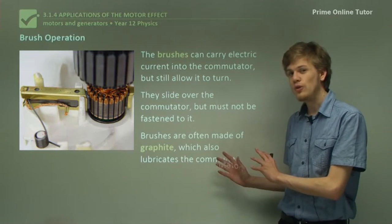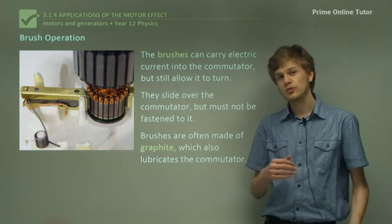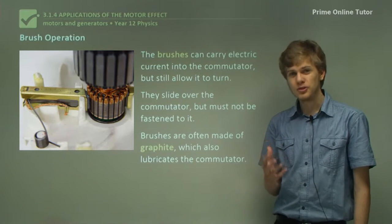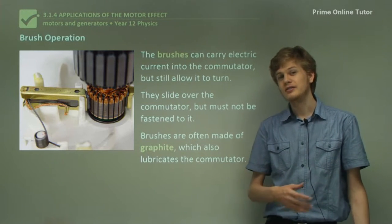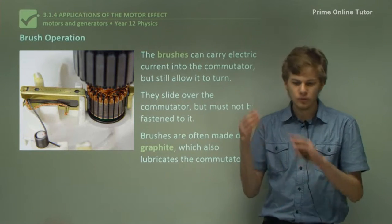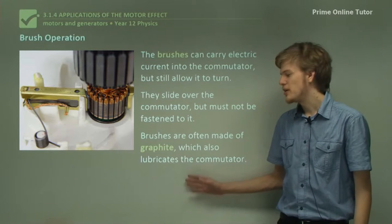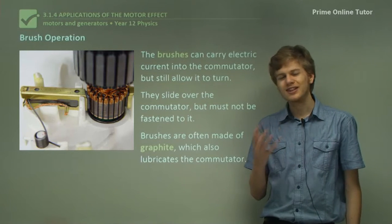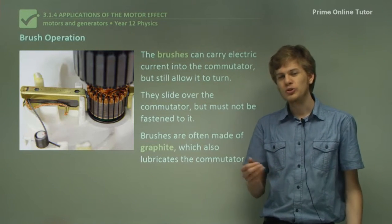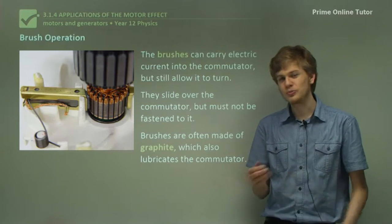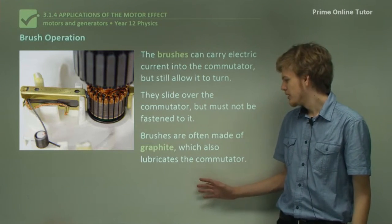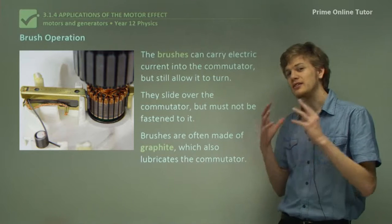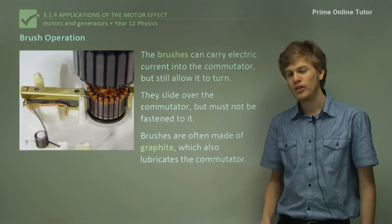Now, brushes are often made of graphite. Graphite is a form of elemental carbon which is able to conduct electricity. It's often used as a pencil lead. The good thing about graphite is that it's quite slippery. When you write with a pencil, the graphite slips off onto the paper — that's what leaves the pencil marks. So the graphite is able to lubricate the commutator, meaning the commutator stays slippery and is able to keep spinning without being slowed down by the brushes.